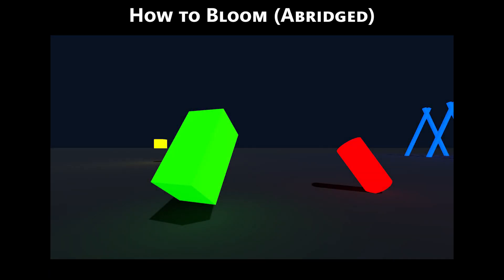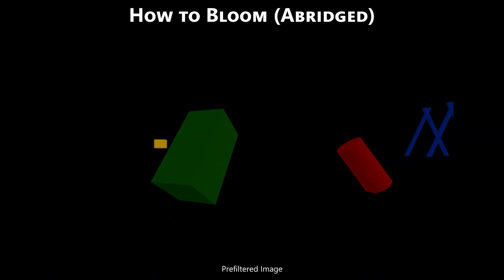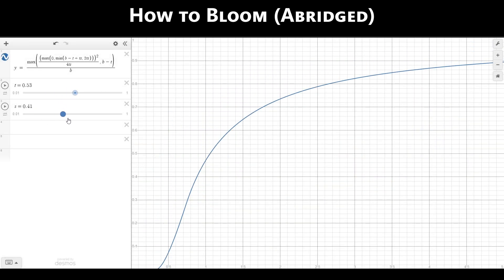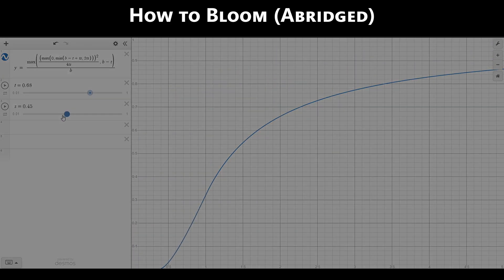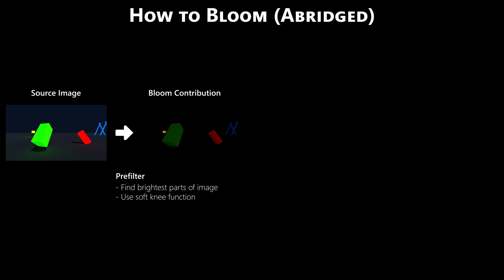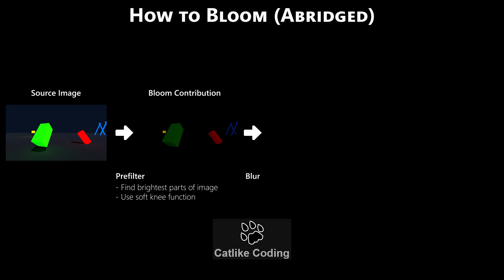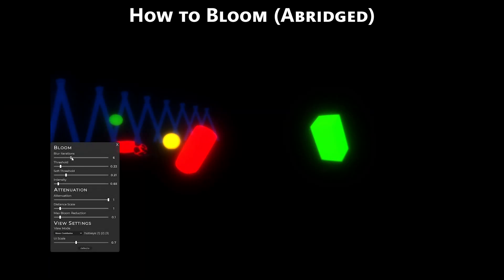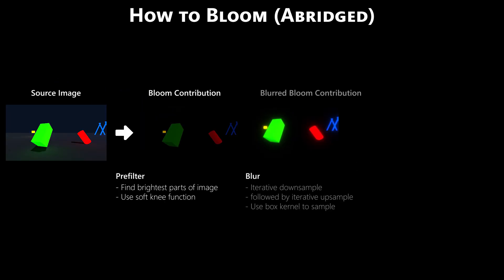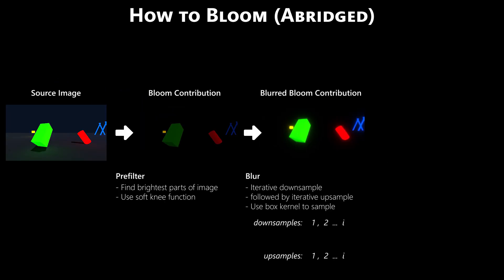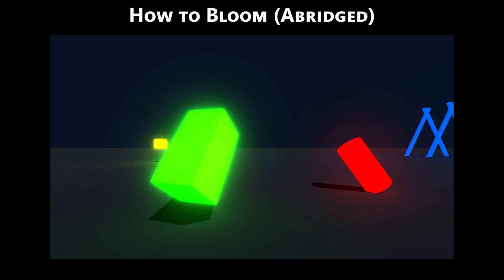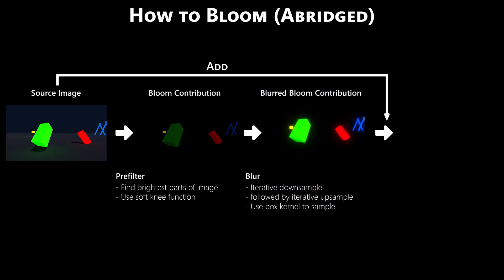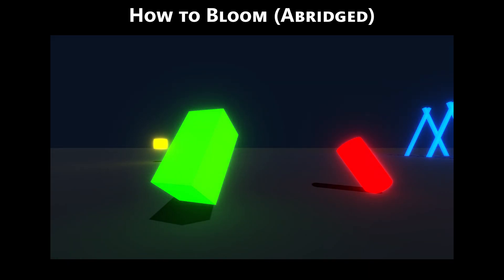To implement Bloom, the first step is to pre-filter the source image — we calculate and decide which pixels on the screen are bright enough to apply the Bloom effect. The most standard way is to use a soft-knee function so that we can tweak the threshold of what color values are considered bright enough. Once we have a map of the pixels that will contribute to the Bloom effect, the next step is to blur these portions of the image. As recommended by CatLike Coding, I am using iterative down and up sampling with a box filter. We also add the down samples and corresponding up samples together during the up sampling iterations, making blurring less uniform and creating higher brightness intensity closer to the Bloom sources. The last step is to add the final blurred result to the source image, creating the brightening and color bleeding Bloom effect we are all familiar with.